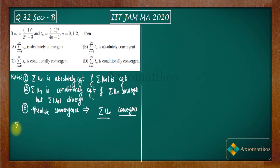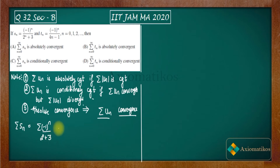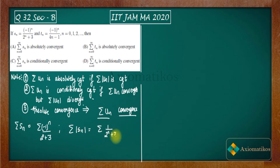What series do we have? We have summation Sn. What is Sn? It's minus one to the power n divided by two to the power n plus three. This is our series. Firstly, I will check absolute convergence, so I will calculate summation of one by two to the power n plus three. To check whether this series is convergent or not, I will use the limit comparison test.